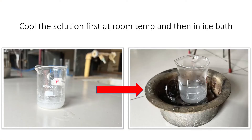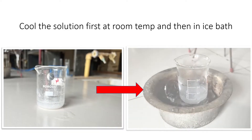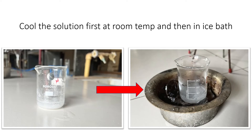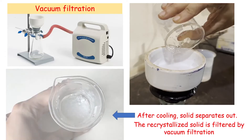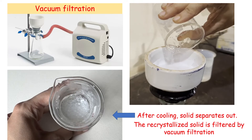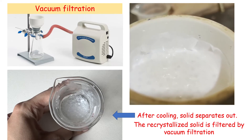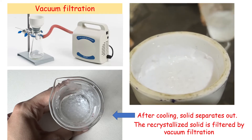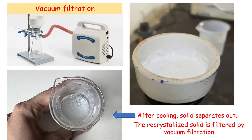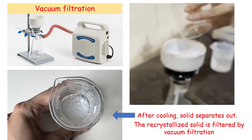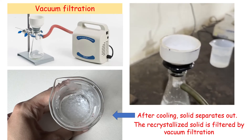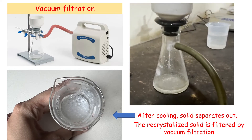Now we will cool this solution in a beaker, first at room temperature and then in an ice bath. After cooling, solid separates out. We will filter the solid using vacuum filtration, and you will get all the separated solid.